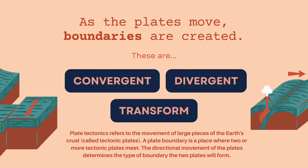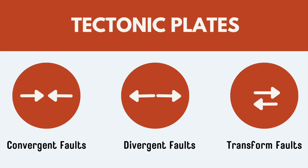As plates move, boundaries are created — convergent, divergent, and transform. Plate tectonics refers to the movement of large pieces of the Earth's crust. A plate boundary is a place where two or more tectonic plates meet. The direction of movement of the plates determines the type of boundary the two plates will form — hence convergent, divergent, and transform. Now let's look into them.